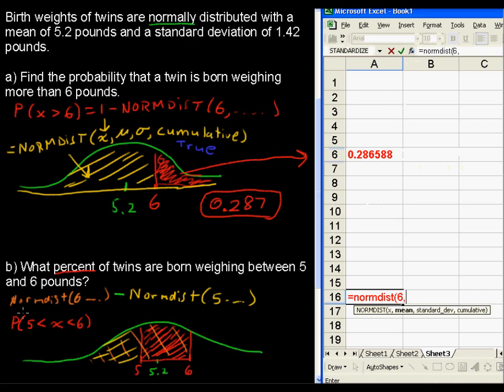And then we've got to put in the mean of 5.2 comma standard deviation of 1.42 comma true, we want that to be cumulative, minus the normdist.